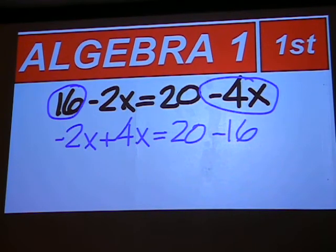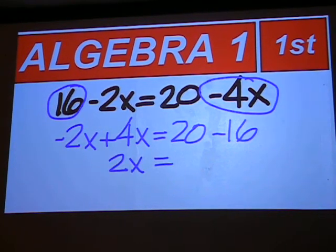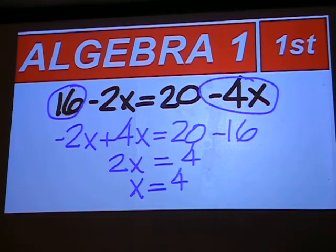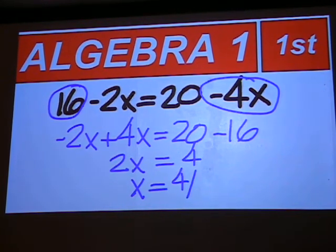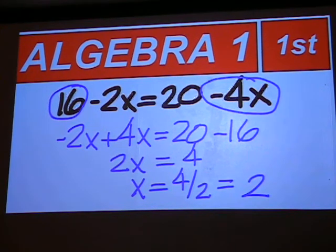Negative 2x plus 4x is 2x. 20 minus 16 is 4. Divide 4 by 2. Your answer is 2.